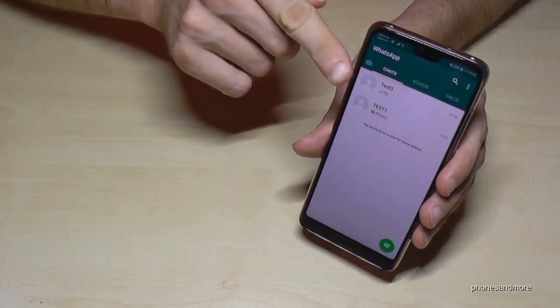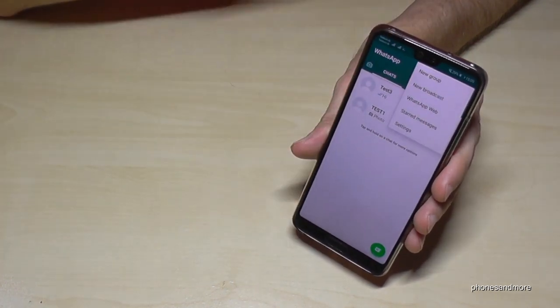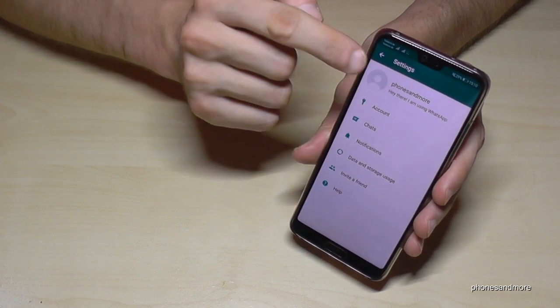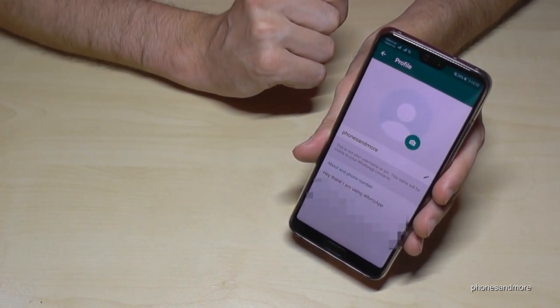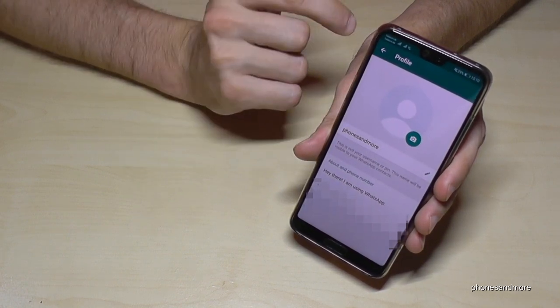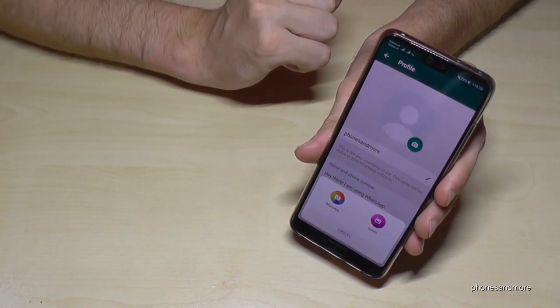First, if you have the screen with your chats, go to the three dots, then settings. Tap the first option and you're in your profile where you can see your number. You can add a picture by tapping the camera symbol.